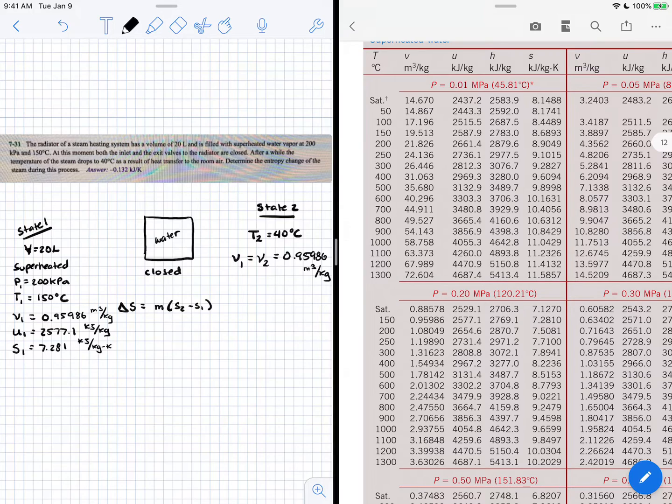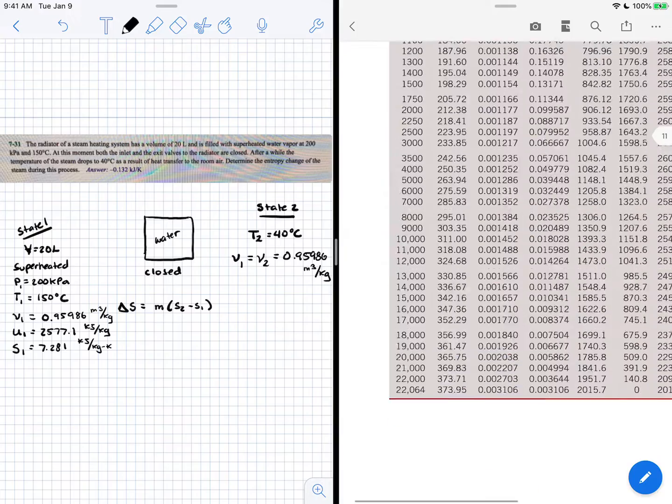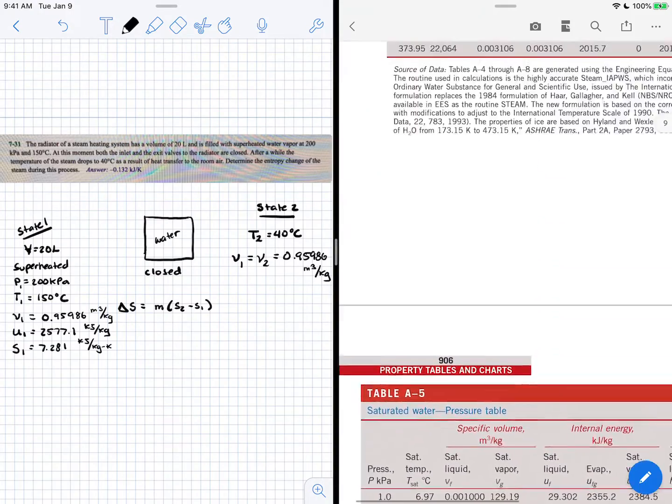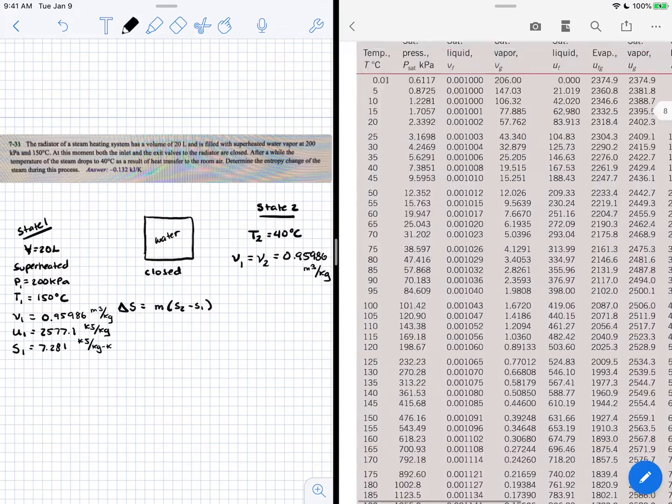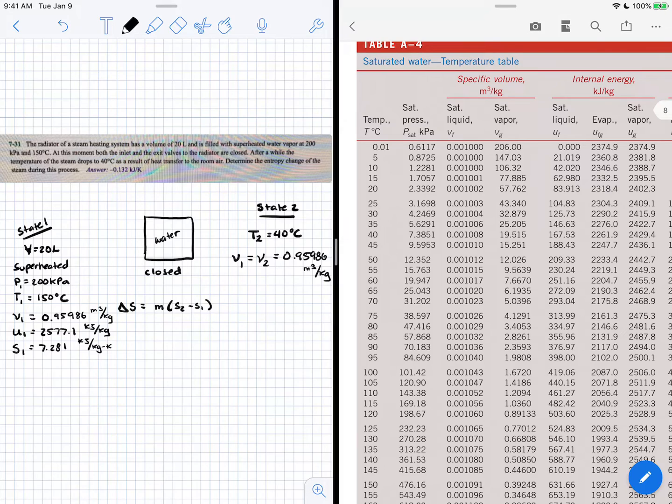Now we have two properties: temperature and specific volume. With that, we can determine if this is superheated, a mixture, or saturated. Let me go to the temperature table. Looking at 40 degrees, the specific volume for saturated liquid is 0.001, and the upper bound is 19.5. We're within that bound, so we're somewhere between saturated liquid and saturated vapor—we're a mixture at this condition.